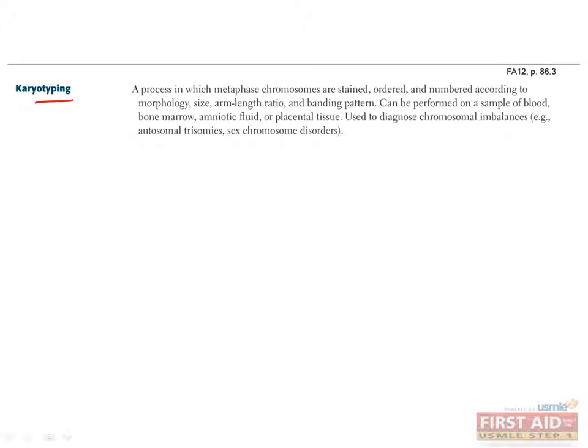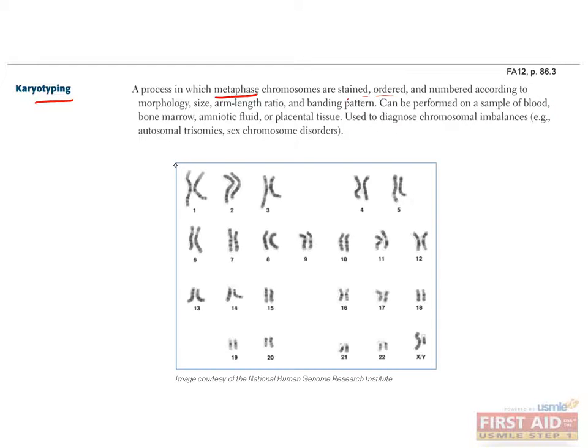The last technique I'll cover is called the karyotype. This is the process of staining, ordering, and numbering chromosomes based on morphology, size, and ratio of arm lengths. This can only be done when DNA is condensed, which is at metaphase, so usually you would use a drug that halts the cell cycle specifically at metaphase first. You end up with an image like this, which allows you to see all the chromosomes, so you can look for gross abnormalities and diagnose diseases such as chromosome imbalances. For example, patients with Down syndrome would have a third 21st chromosome.